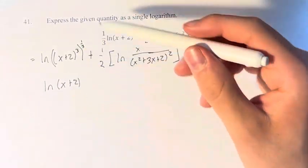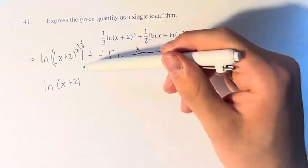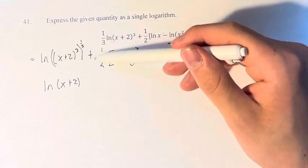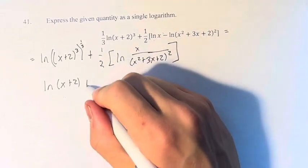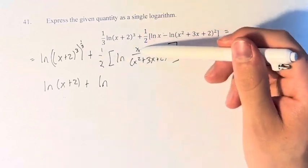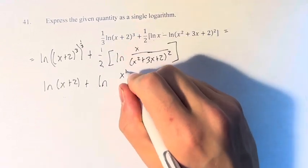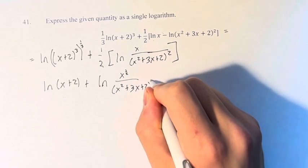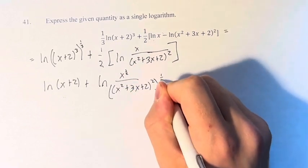This is plus, here is where we input the exponent. You have a number outside, you turn it into the exponent. Plus the natural log of x to the one-half over x squared plus 3x plus 2 squared to the one-half.